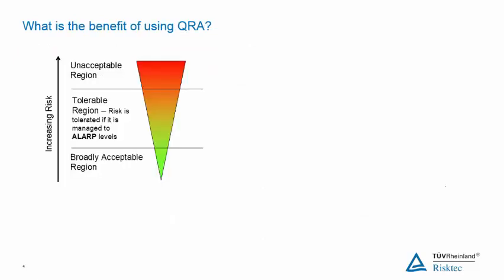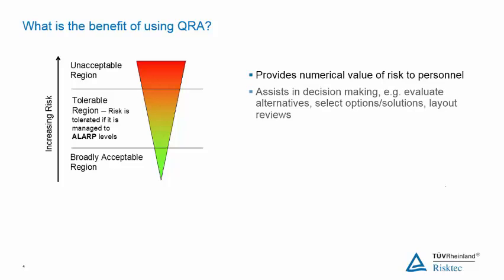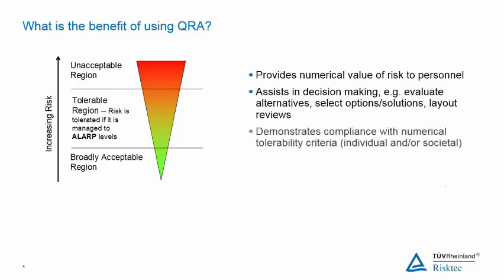So what are the benefits of using QRA? Quantitative risk assessment provides us with a numerical value of risk to personnel, which can then be compared with other numbers. For example, if you calculate the risk value for two different options, you can compare the results to see which option is the lowest risk solution. Or you can compare your calculated value against criteria set by your company or the regulator to determine whether your risk is below intolerable or unacceptable levels.